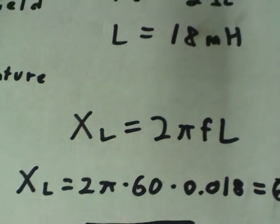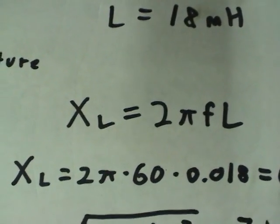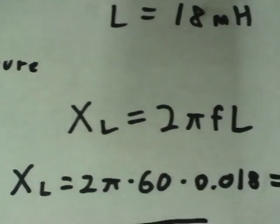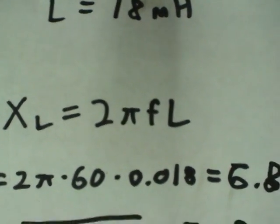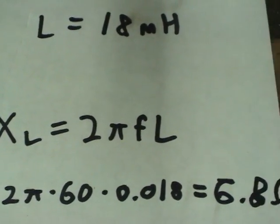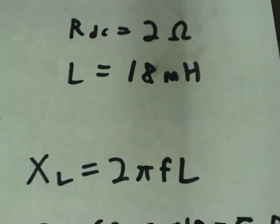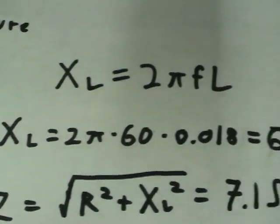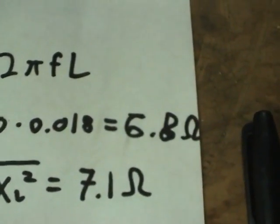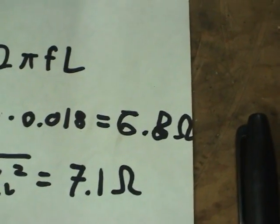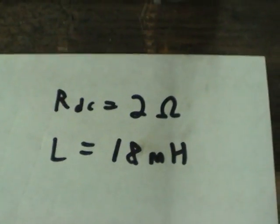Here's the formula for calculating inductive reactance. The reactance in ohms is equal to 2 pi times the frequency, 60 hertz in this case, times the inductance, 18 millihenries. And if you calculate that through, you get a reactance of 6.8 ohms, which is much greater, in fact, than the DC resistance.